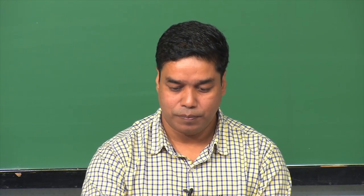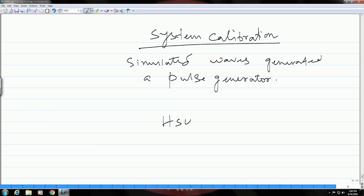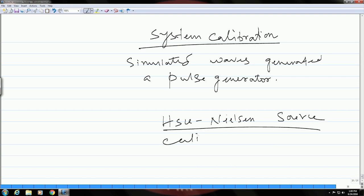In order to overcome this limitation, these two persons came up with a method or source which is very close to an actual acoustic emission source. This source or method is named after the inventors Hsu and Nielsen, and is known as the Hsu-Nielsen method or Hsu-Nielsen source to calibrate acoustic emission systems.